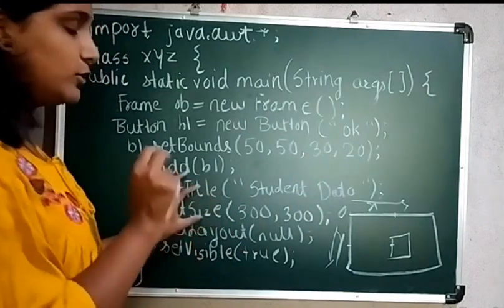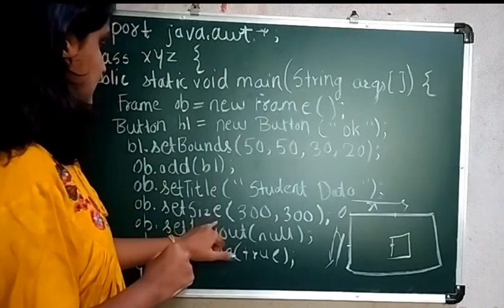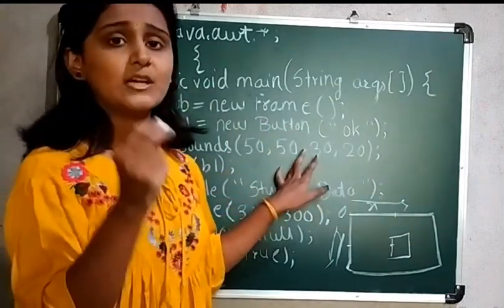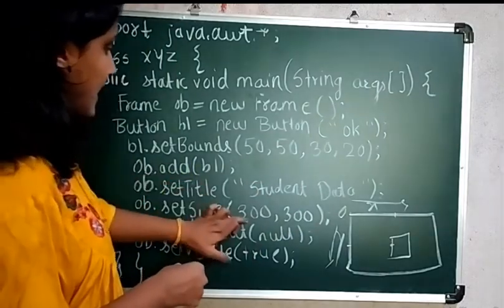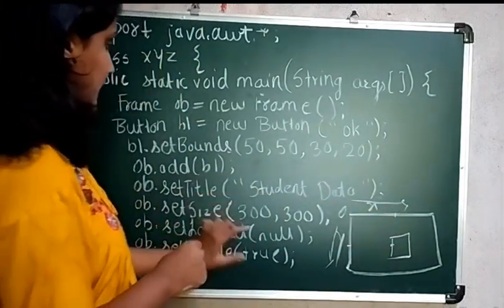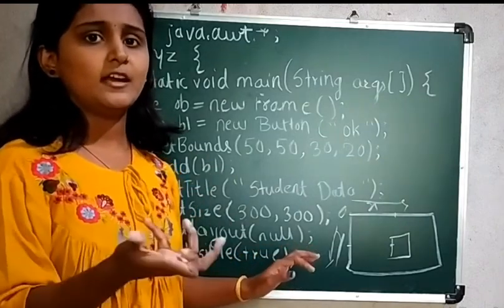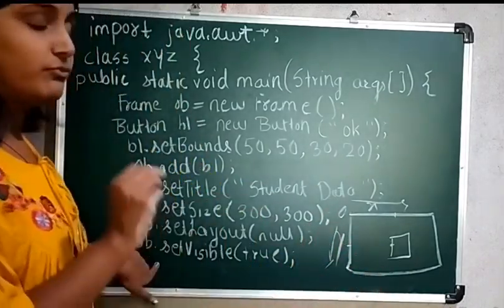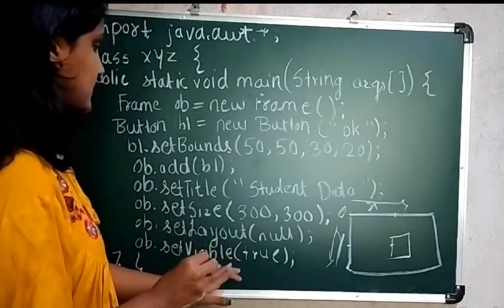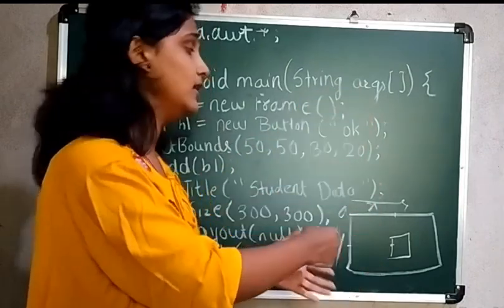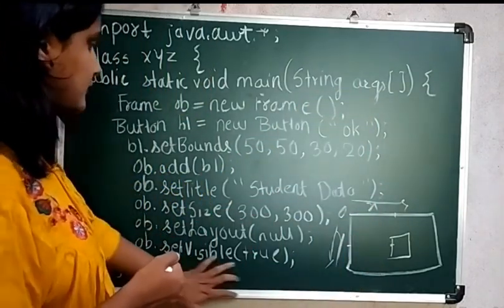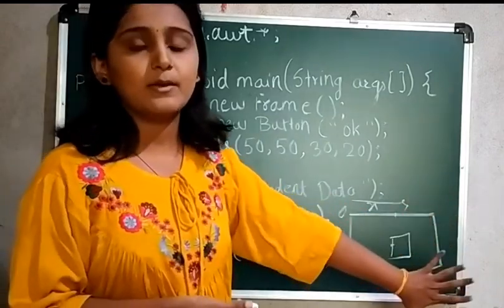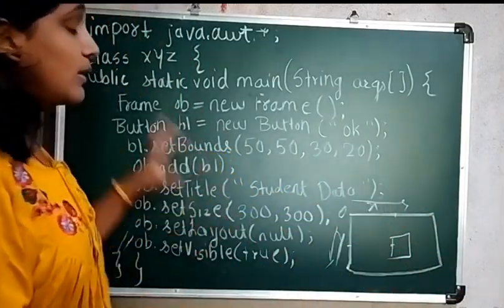Next is ob.setTitle("Student Data") to set the title for the frame. Then ob.setSize() to set the size of the frame — remember, setSize sets the frame size while setBounds positions a particular component. Then ob.setLayout(null) — I don't want any layout so I passed null; by default it would be FlowLayout. The last and very important one is ob.setVisible(true) so that the frame and all its components are visible. If you omit this, the frame will not be visible.